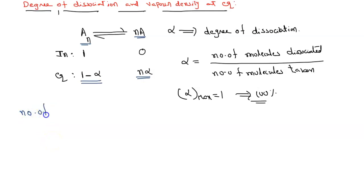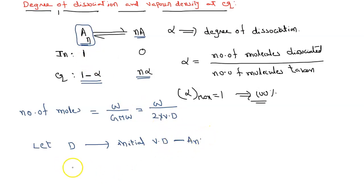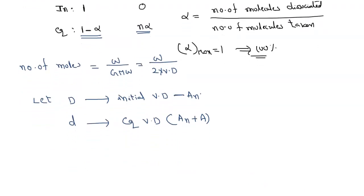Number of moles is equal to weight divided by gram molecular weight, and gram molecular weight can be written as 2 times vapor density. Let capital D be the initial vapor density of A_n, and small d be the equilibrium vapor density, where both A_n and A are present at equilibrium. From this equation, number of moles is inversely proportional to vapor density.